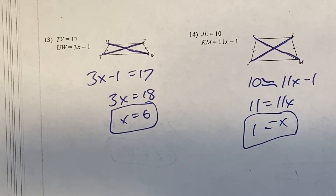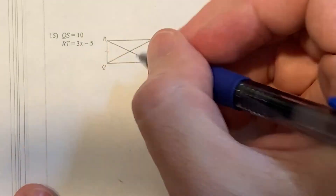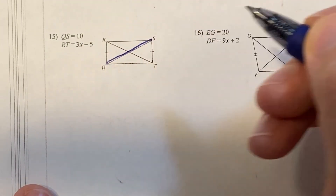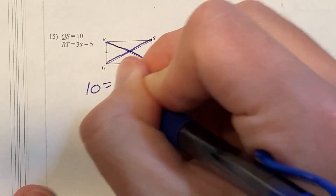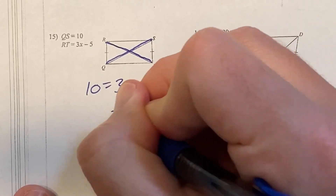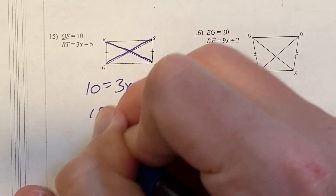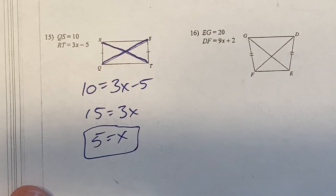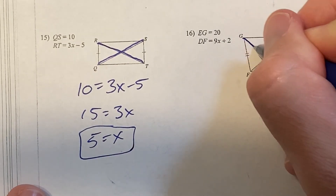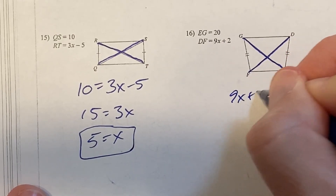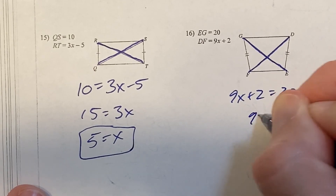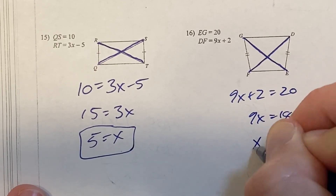Push pause and try problems 15 and 16. Number 15: QS equals 10, RT equals 3x minus 5. So 10 equals 3x minus 5, add 5 to get 3x equals 15, divide by 3, x equals 5. Number 16: EG equals 20, the other diagonal is 9x plus 2. So 9x plus 2 equals 20, subtract 2 to get 9x equals 18, divide by 9, x equals 2.